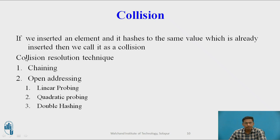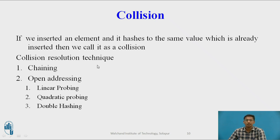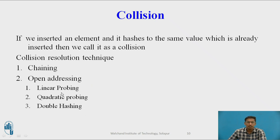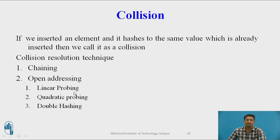There are different collision resolution techniques to handle collisions during hashing. We will see one by one these collision resolution techniques in the next session. The first one is chaining. The next one is open addressing, which has three methods: linear probing, quadratic probing, and double hashing.